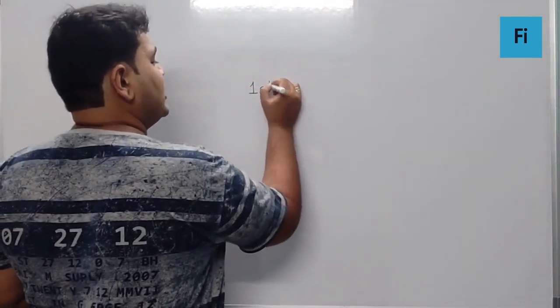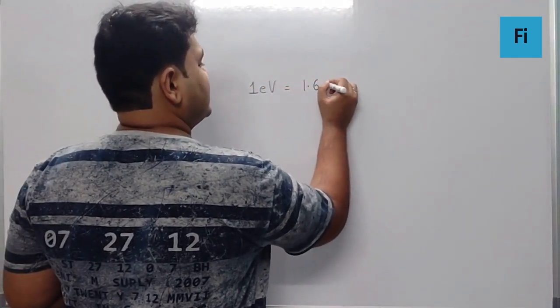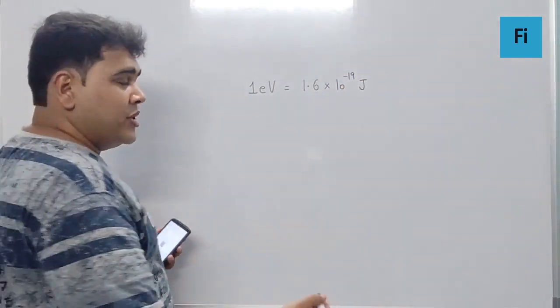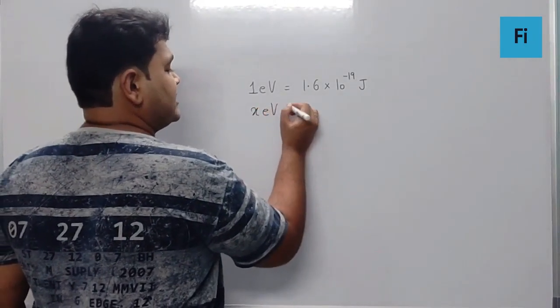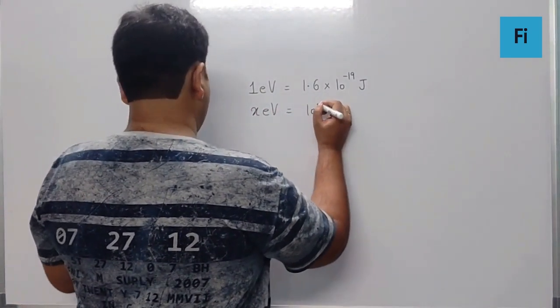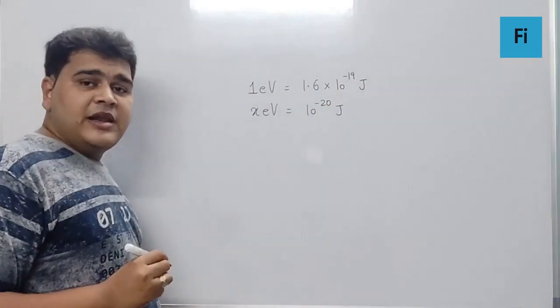Now we know 1 electron volt is 1.6 into 10 raised to minus 19 Joule. So now we are supposed to find X electron volt for the value of 10 raised to minus 20 Joule.